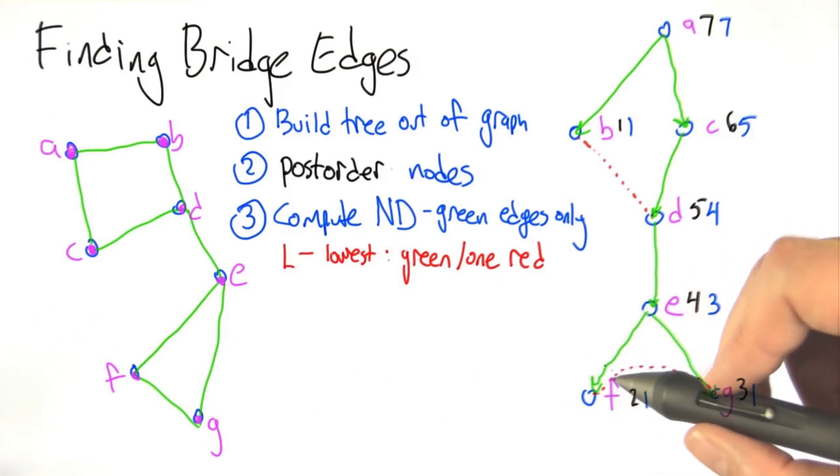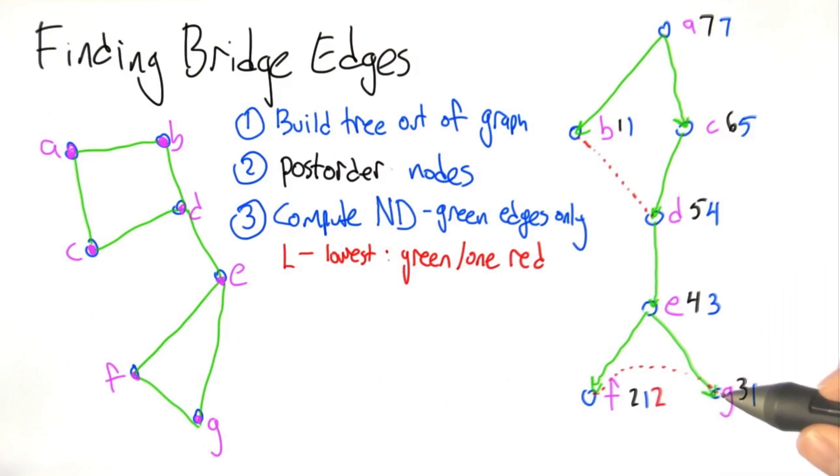So in the case of F, F has itself and it also can reach G. The smallest value there is 2. G has no descendants but it can reach by 1 red edge F. So the smallest of these values 2 and 3 is 2. E has F and G in itself that it can reach and no other nodes by non-tree edges and the smallest of those numbers is 2.